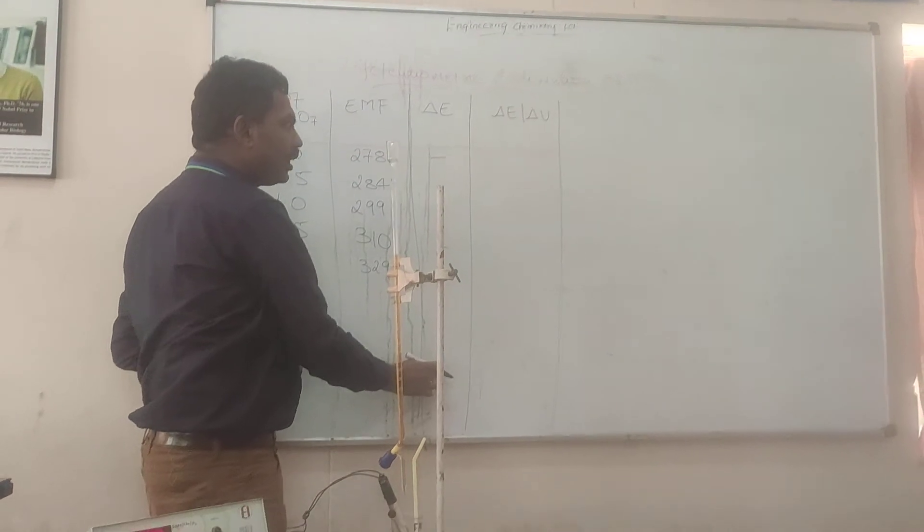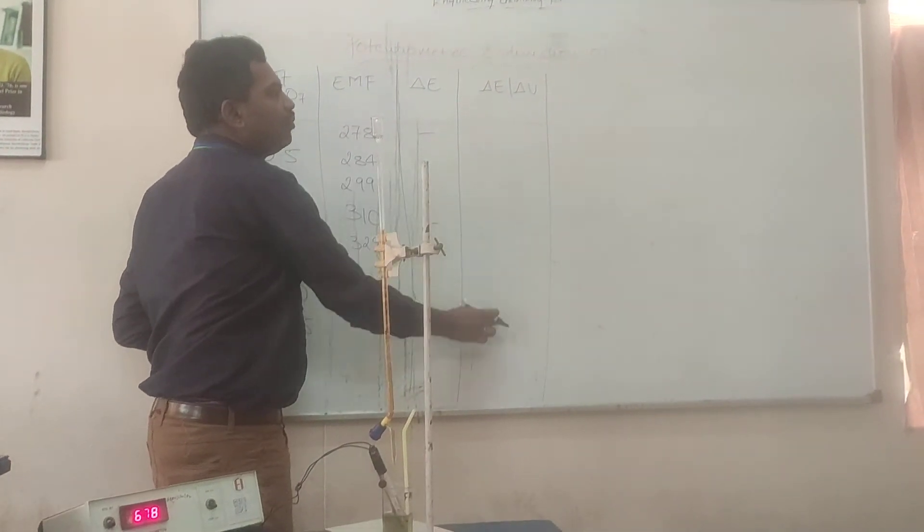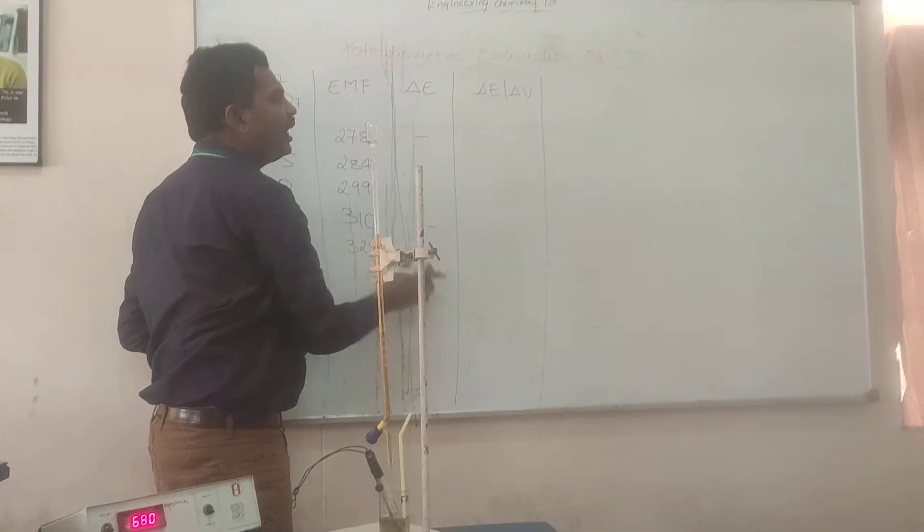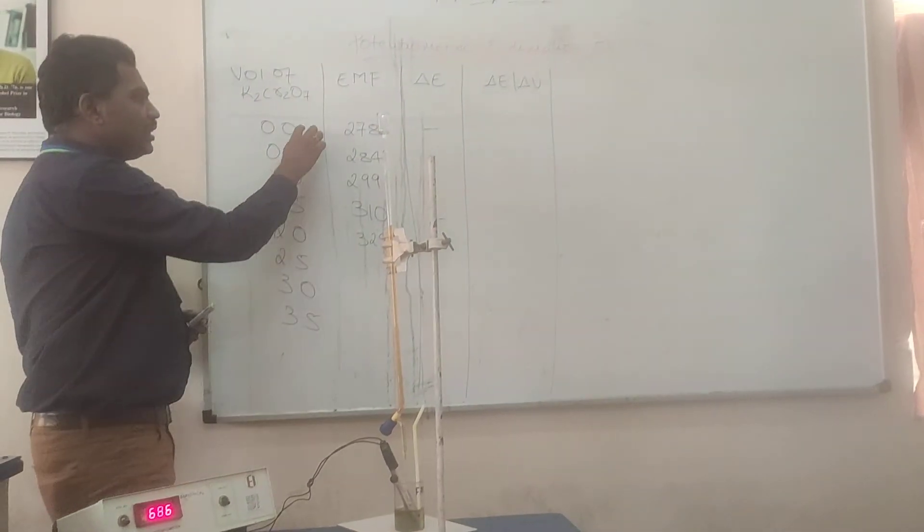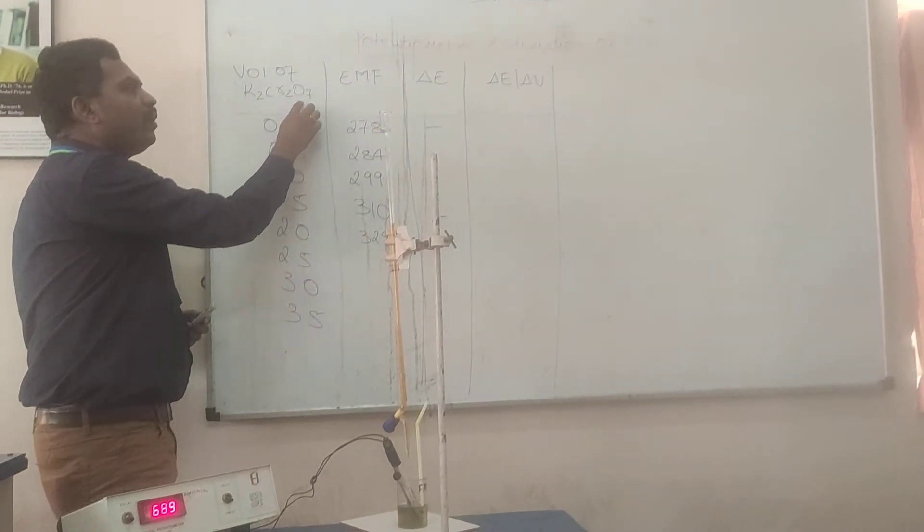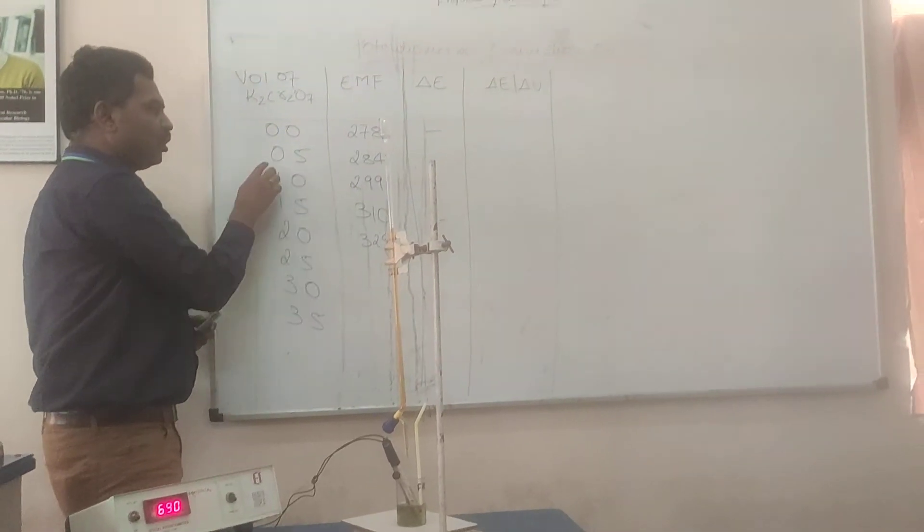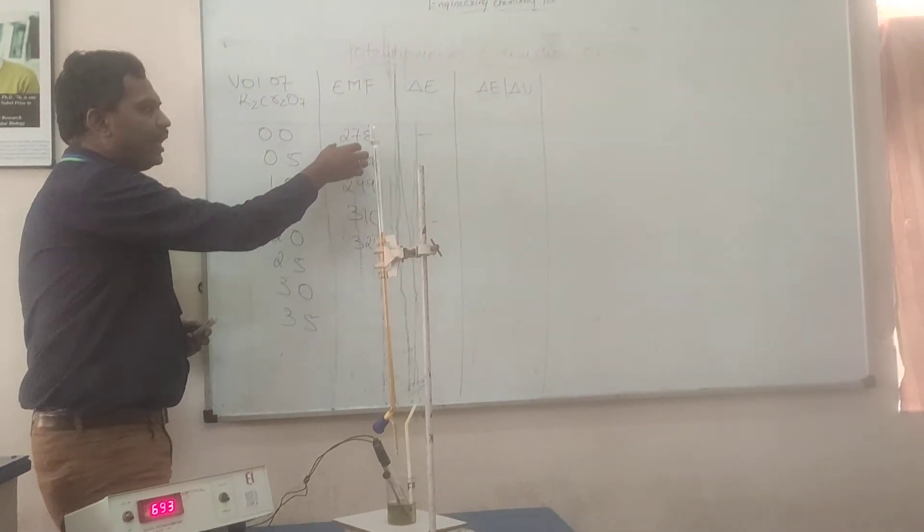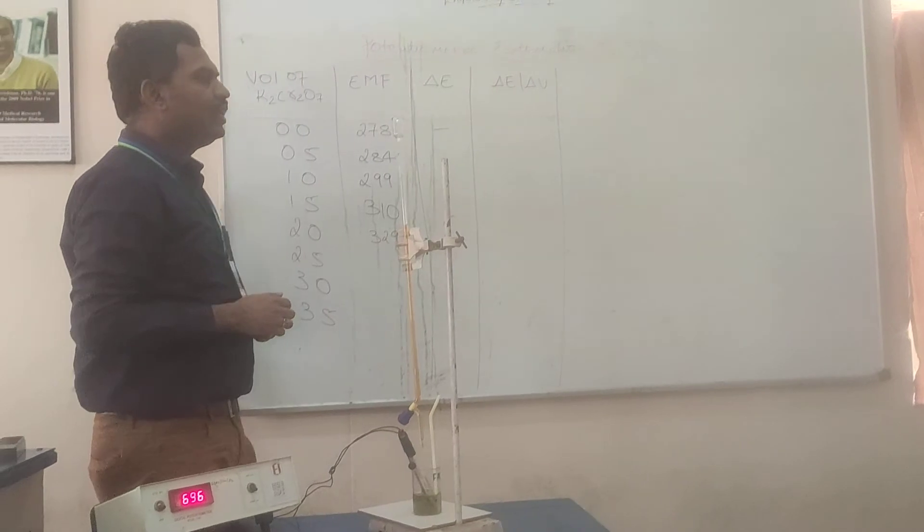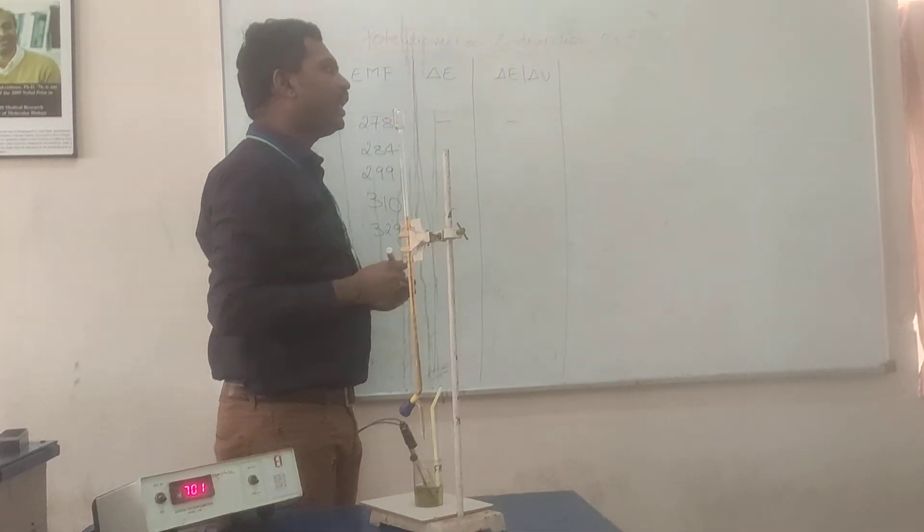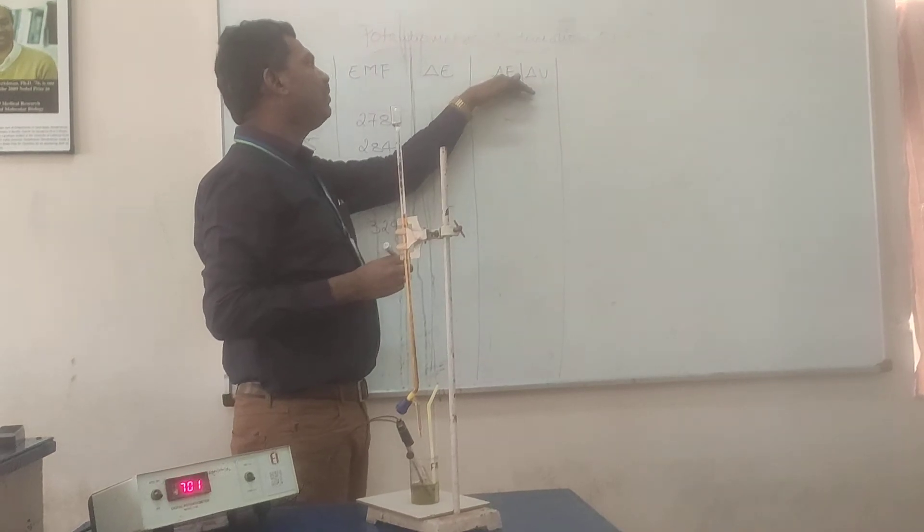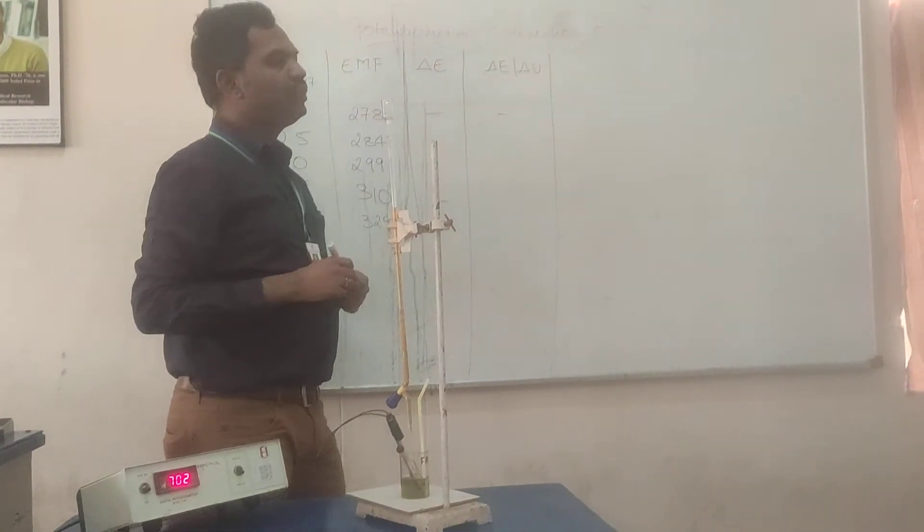Similarly, what are values you get over here? You write here delta E by delta V. What is delta V? Difference in volume. What is difference in volume? So, we are adding dichromate in increments of 0.5. So, 0.5, 0.5, 0.5. Delta E by 0.5, which gives you delta E by delta V.